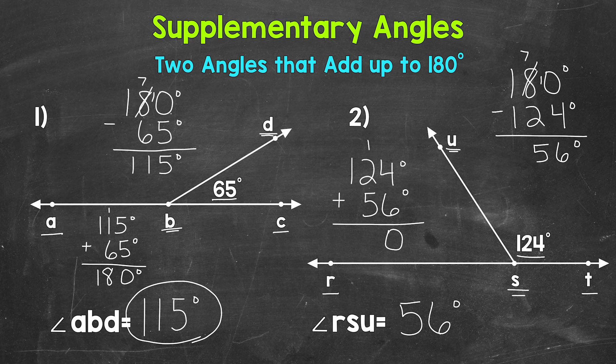1 plus 2 is 3, plus 5, 8. And then we have a 1 in the hundreds place. So 180 degrees. 56 degrees was correct for angle RSU.